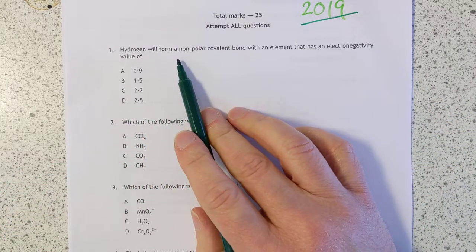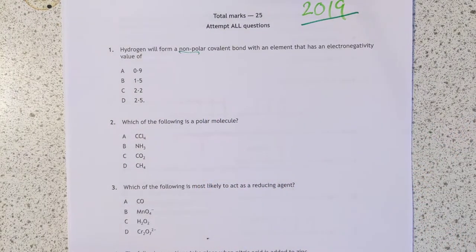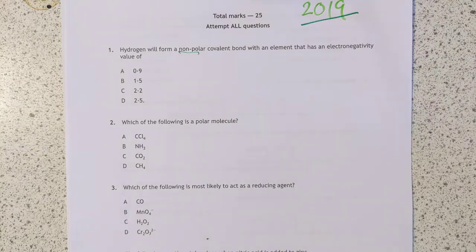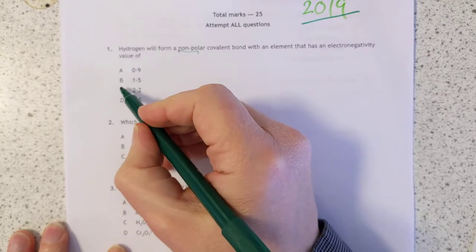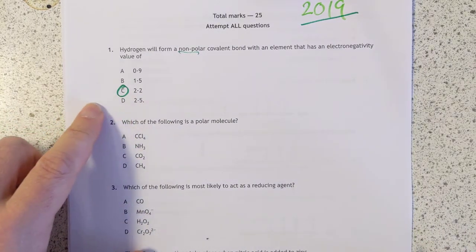Question 1: Hydrogen will form a non-polar covalent bond. Non-polar covalent bond means that you need to have identical electronegativity to hydrogen. Hydrogen's electronegativity is 2.2, it's in the data book of course. So therefore that will form a non-polar covalent bond, even distribution of electrons.